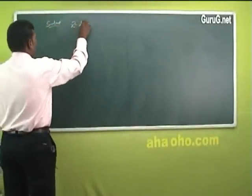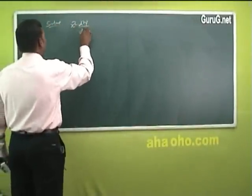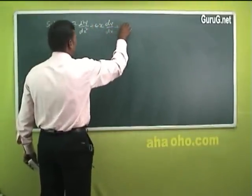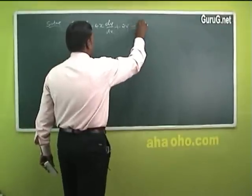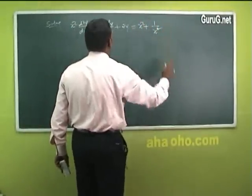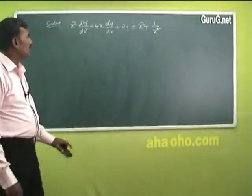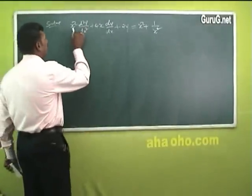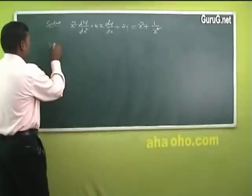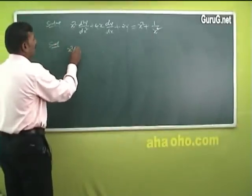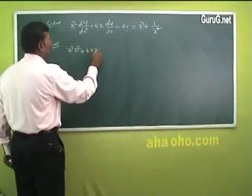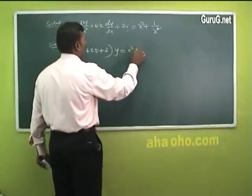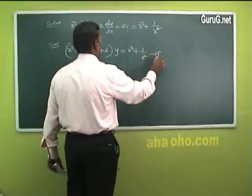Consider the equation x²D² + 4xD + 2y = x² + 1/x². This is Euler's homogeneous linear differential equation with variable coefficients. Rewriting: (x²D² + 4xD + 2)y = x² + 1/x². This is equation number 1.